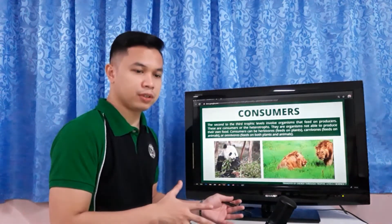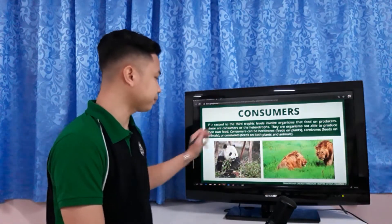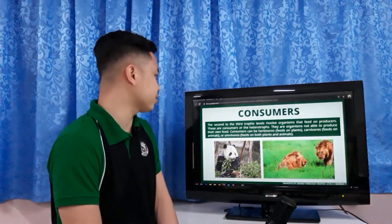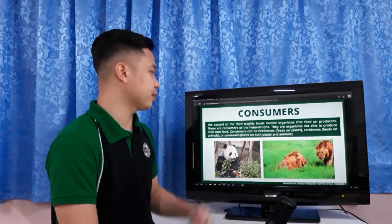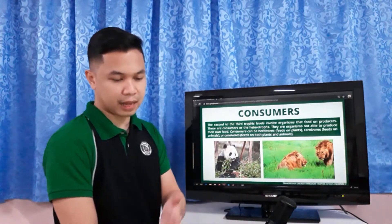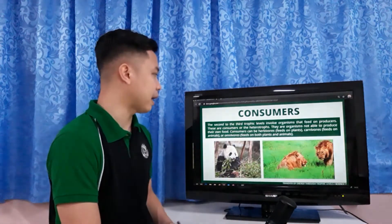If there are producers, there should also be consumers. The second to third trophic levels involve organisms that feed on producers. These are consumers, or heterotrophs — organisms not able to produce their own food. Consumers can be herbivores, which feed on plants; carnivores, which feed on animals; or omnivores, which feed on both plants and animals. For example, a panda eats leaves, making it a herbivore, while a lion is a carnivore.